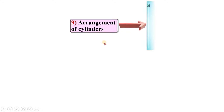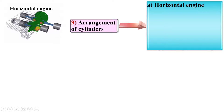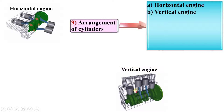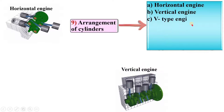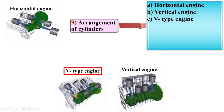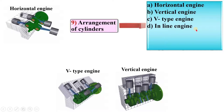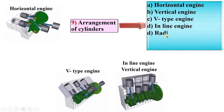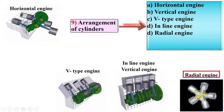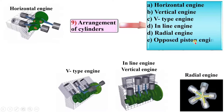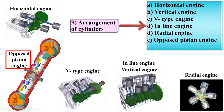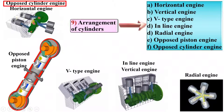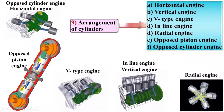According to the arrangement of cylinders, IC engines are classified as: horizontal engine (cylinders in horizontal position), vertical engine (cylinders in vertical position), V-type engine (cylinders arranged in a V shape from the side view), inline engine (all cylinders in one line), radial engine (cylinders in radial direction), opposed piston engine (pistons in opposite directions), and opposed cylinder engine (cylinders in opposite directions).